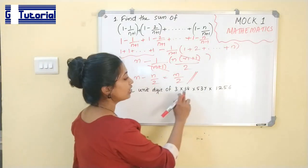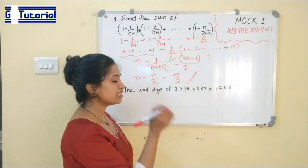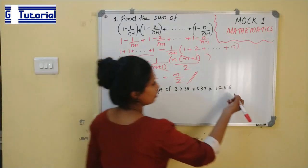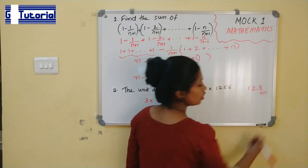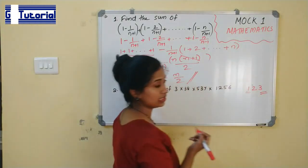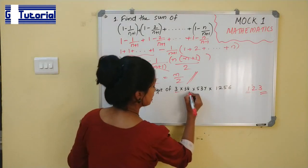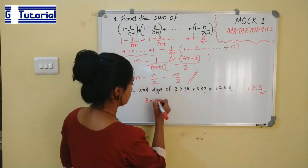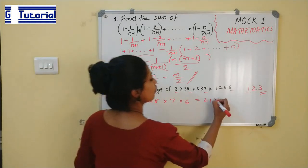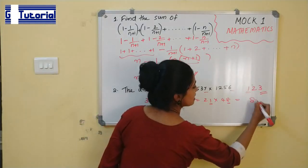Next question: find the unit digit of 3 × 38 × 537 × 1256. In order to find the unit digit of a product, you just multiply the unit digits of each of the numbers. The unit digits are 3, 8, 7, and 6. So 3 × 7 = 21 (unit digit 1), and 8 × 6 = 48 (unit digit 8). Then 1 × 8 = 8. So 8 is the answer.